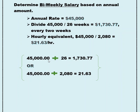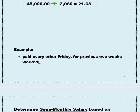$45,000 divided by 26 weeks gives you $1,730.77, and that is your bi-weekly salary before taxes, before deductions — that would be your gross amount. Your hourly equivalent is $21.63. Take your $45,000 divided by 2,080, and that gives you your hourly equivalent of $21.63. An example of how this is paid is usually every other Friday, for the previous two weeks worked, but this will vary based on your employer's pay schedule.